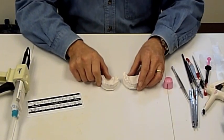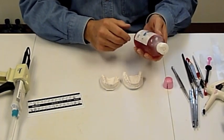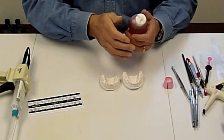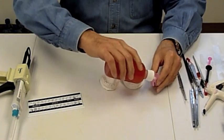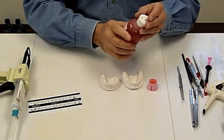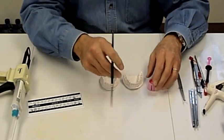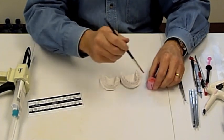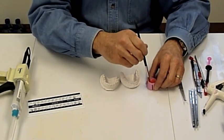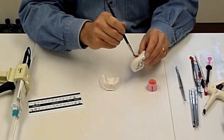Once we have the models marked, we will coat them with a separating medium. In this case, we're using one from Great Lakes called Liquid Foil. We'll paint the teeth with a separating medium with a brush so that we can easily remove the brackets after they're bonded to the teeth.